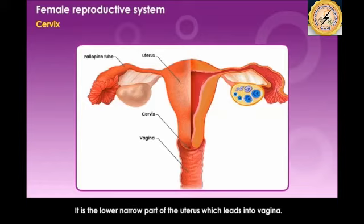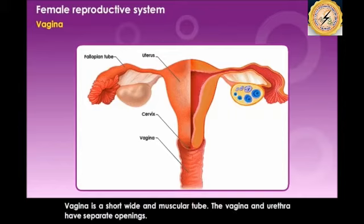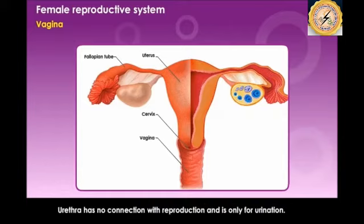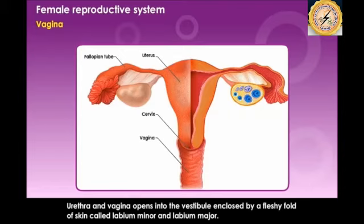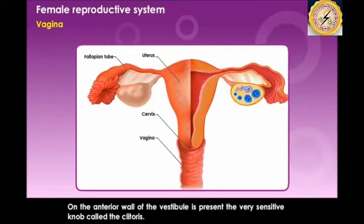The cervix is the lower narrow part of the uterus which leads into the vagina. The vagina is a short, wide, and muscular tube. The vagina and the urethra have separate openings — the urethra has no connection with reproduction and is only for urination. Both the urethra and the vagina open into the vestibule, which is enclosed by fleshy folds of skin known as the labium minor and labium major. On the anterior wall of the vestibule is a sensitive knob known as the clitoris.